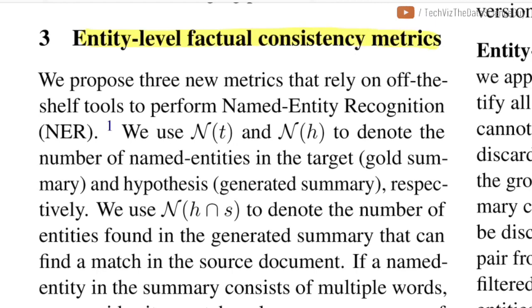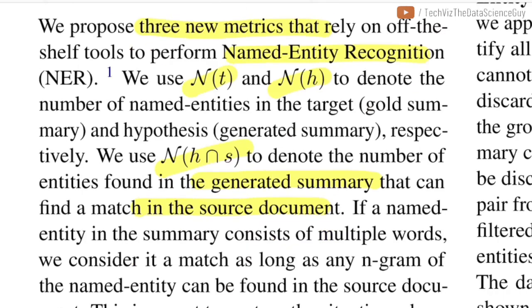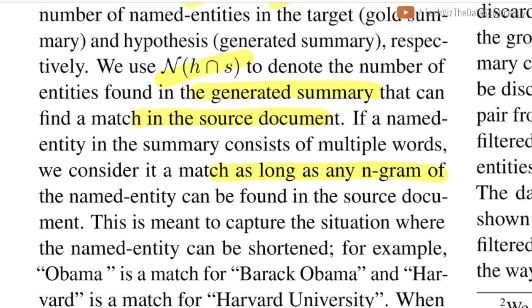Talking about the entity-level factual consistency metrics, they proposed three new metrics that rely on existing named entity recognition models. Let n(T) and n(H) be the number of entities in the target summary (the gold summary) and the hypothesis summary (which we generate). The intersection between both these sets denotes the number of entities in the generated summary that are also present in the source document. For multi-word entities such as a name of a person or place, as long as any n-gram of the entity matches the ground truth entities, it is treated as a hit and considered part of the intersection.